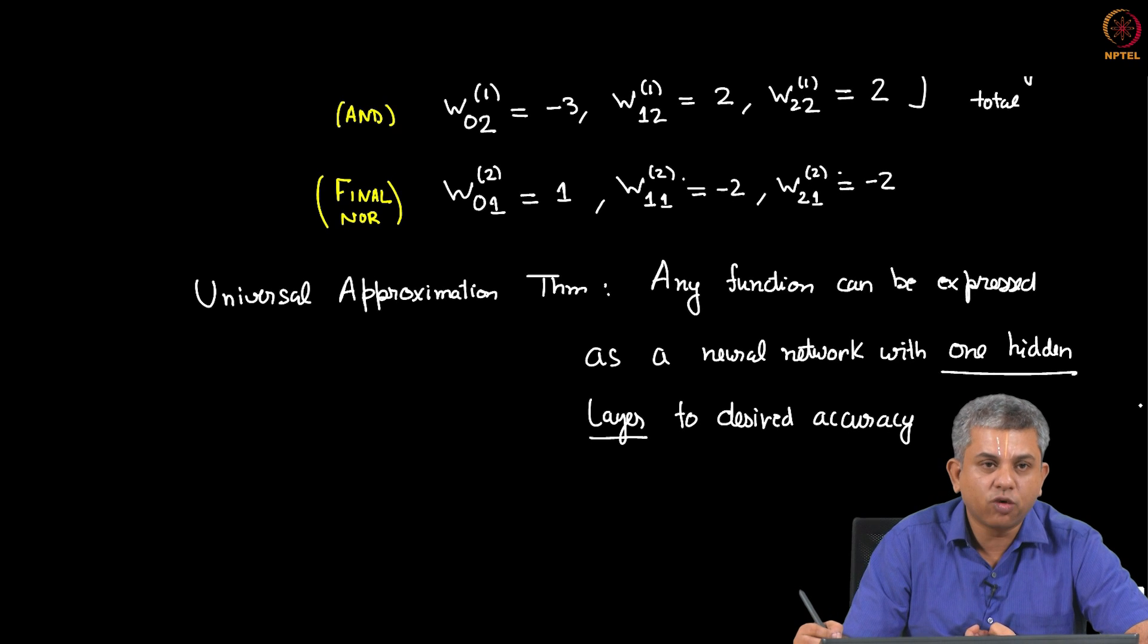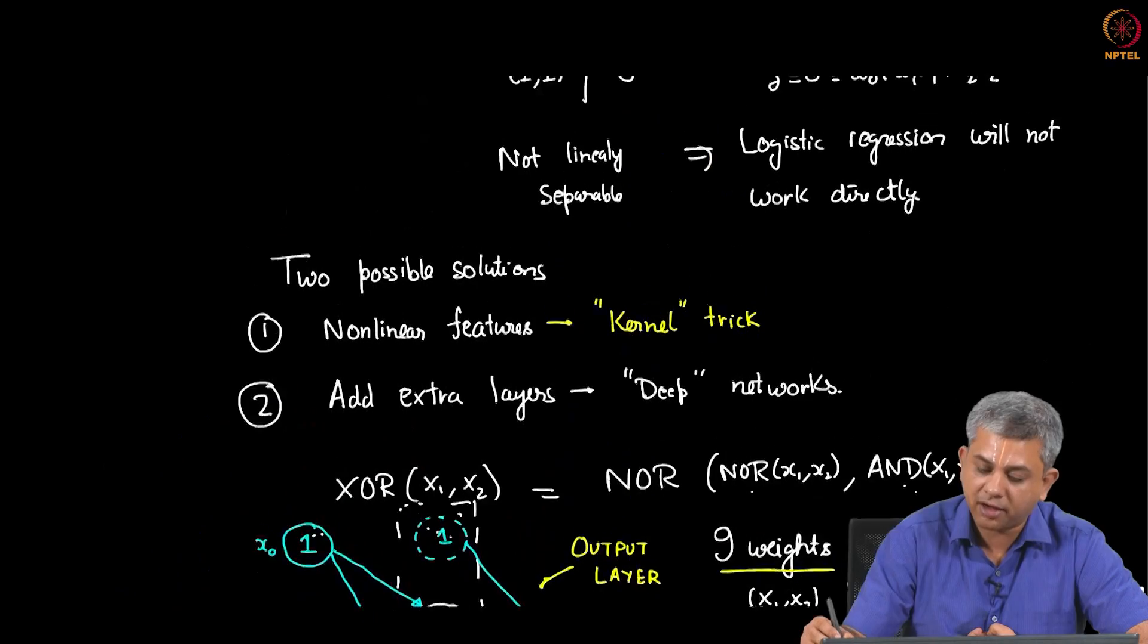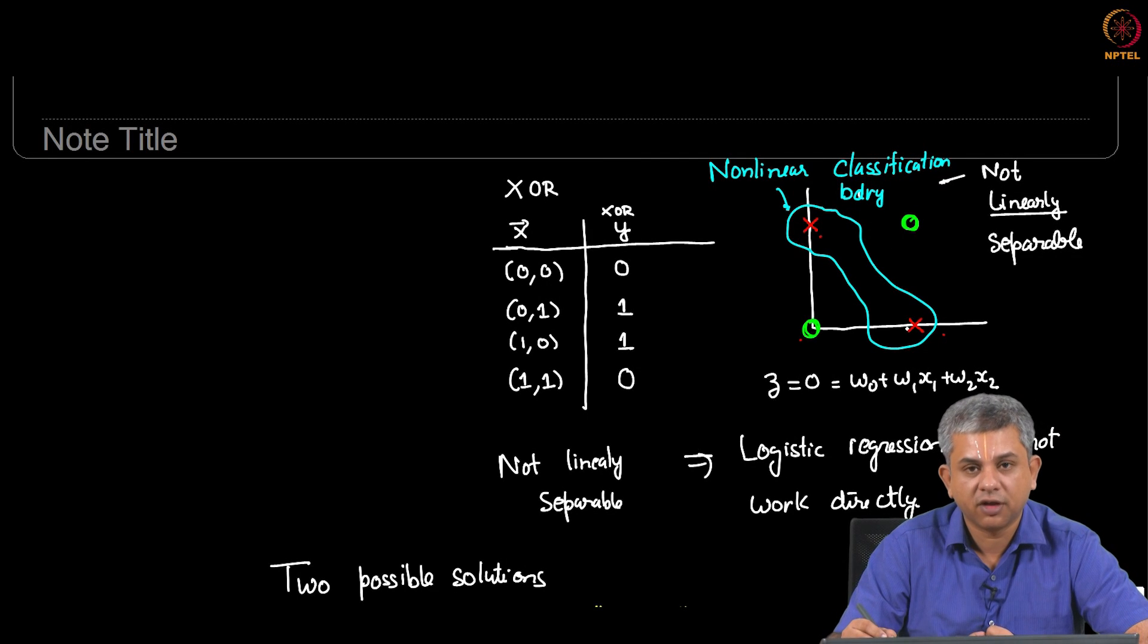Now what would be a good approximation? What number of neurons would you need? That is always questionable. Now I would like to finally end with one simple interpretation of what is happening here. Let us go back to our original diagram. We had these 4 points. When they were on a single plane, when they were on simply the XY plane, it was not possible to separate them using a single line.